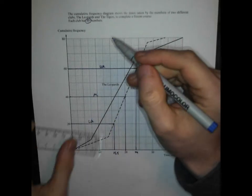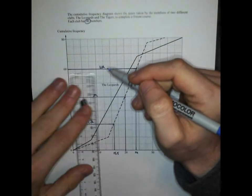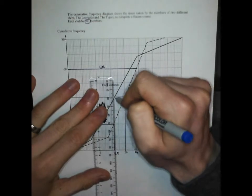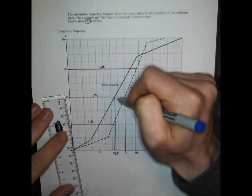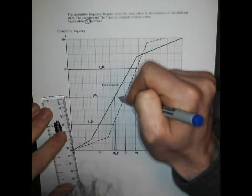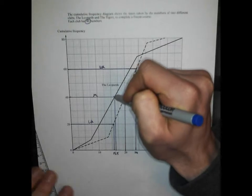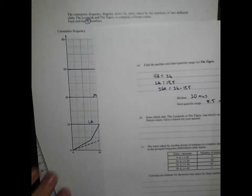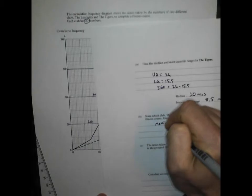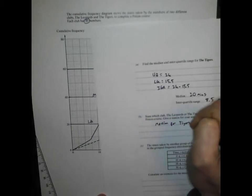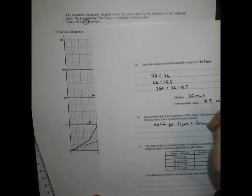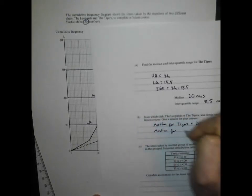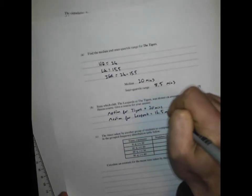We've worked out the median for the Tigers as 20. Let's get the median for the Leopards. We've got our median line going across at 40. Let's see where it hits the Leopards and take a trip down there. It's hard to read this, but I'm going for about 16.5 maybe. Median for the Tigers was 20 mins. Median for the Leopards is about 16.5 mins, but my photocopying is not the best here.